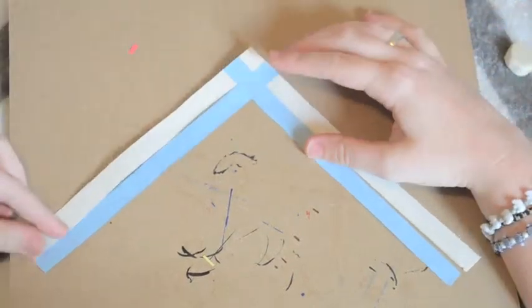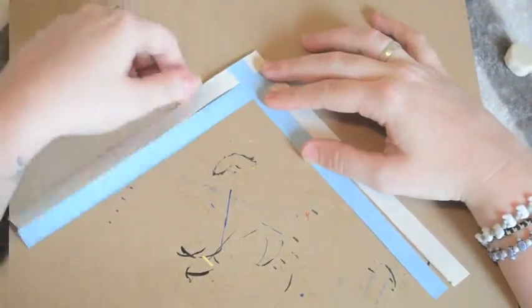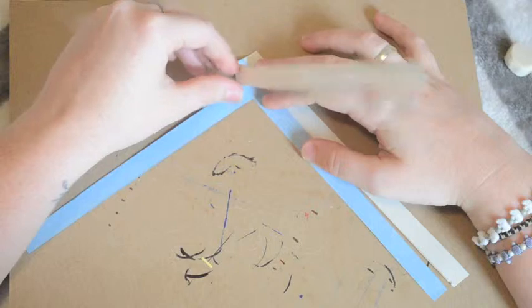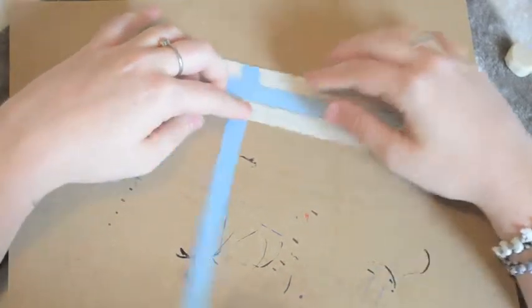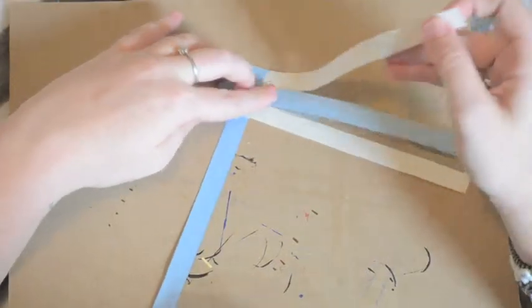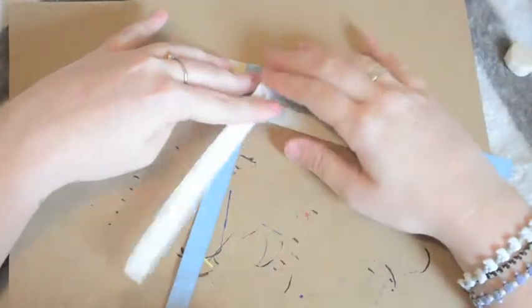Now taking the first right strip that I'm pointing at, you're going to fold it over and line it up against the blue strip on the other side. And then you're going to do the same thing to the white one on the other side, and just keep repeating this process over and over until you get down to the bottom.